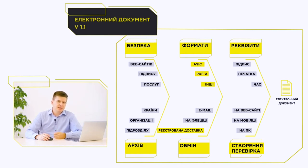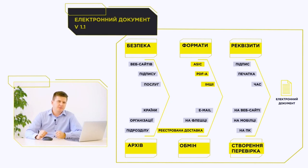Usually use of email is common, but the main disadvantage of this is the inability to prove sending and receiving of the electronic documents. Therefore, the reform of electronic trust services has legally regulated the service of registered delivery, which provides legally significant evidence of sending and receiving electronic documents. Creating an electronic document already involves the use of websites, software, and your computer or mobile phones.